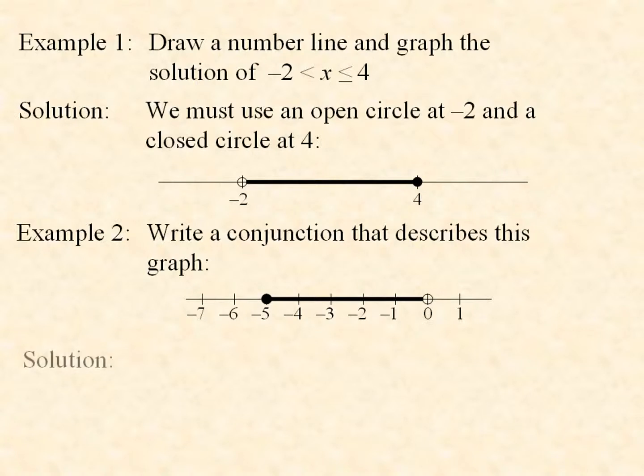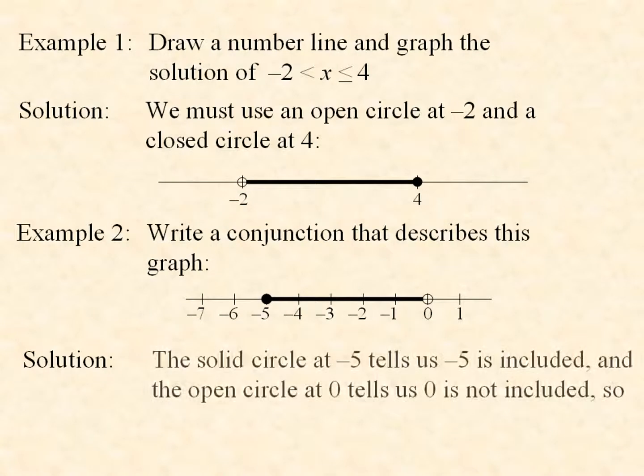So the solid circle at -5 tells us -5 is included, and the open circle at 0 tells us 0 is not included, and so we write this inequality: -5 ≤ x < 0.